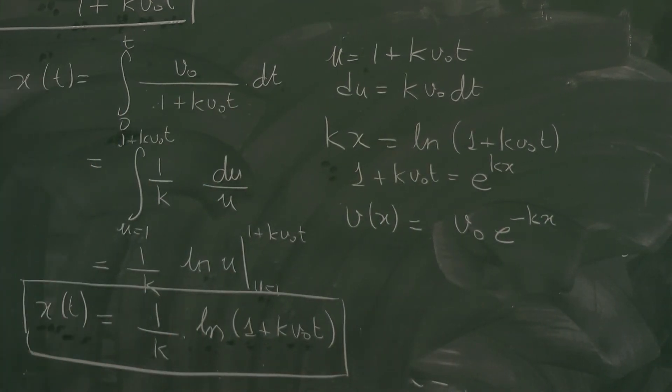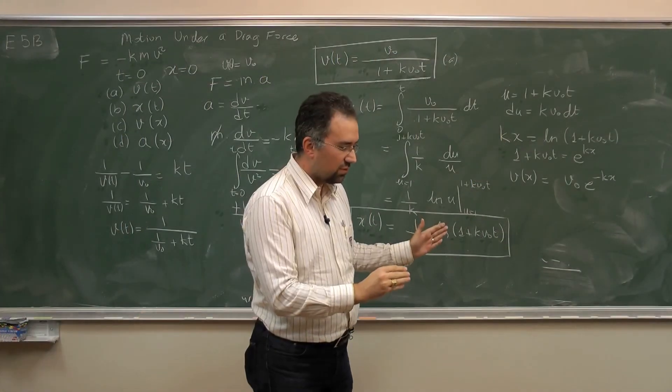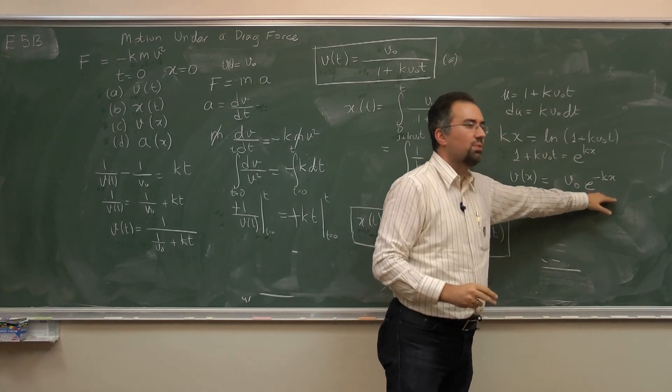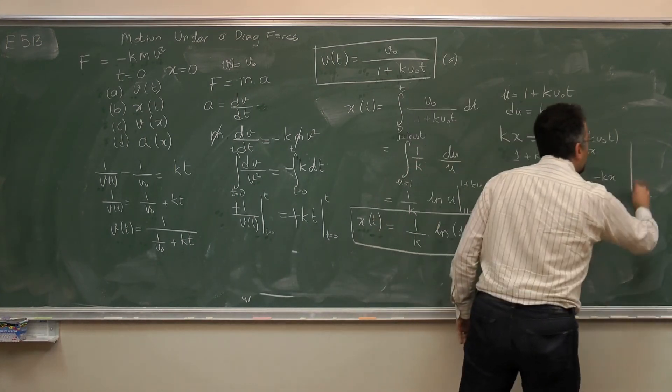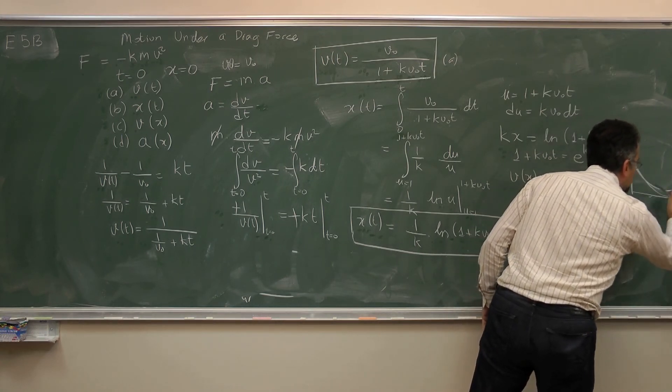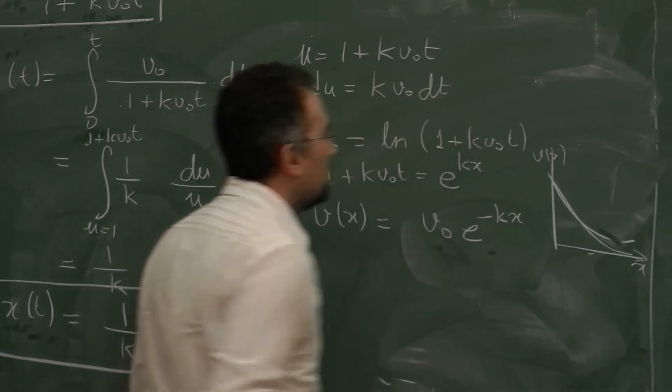So you end up, if you look in terms of position, if you look at a distance x, you will find that the speed will decay exponentially like that. It drops much faster than that, in fact. So v is a function of x. This is what happens.